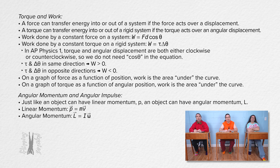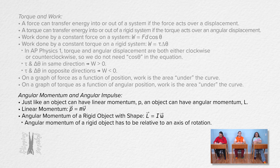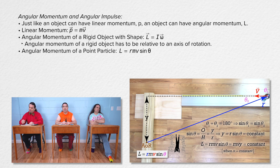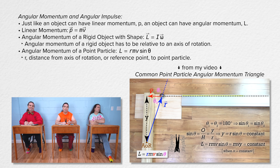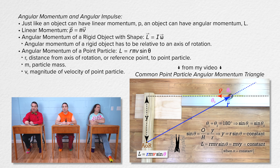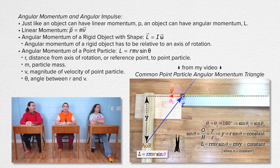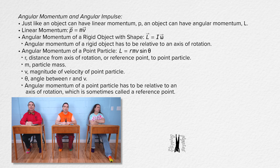Unlike linear momentum, there are two equations for angular momentum. The one just given is for the angular momentum of a rigid object with shape, and it has to be relative to an axis of rotation. The angular momentum of a point particle is R times M times V times sine theta, where R is the distance from the axis of rotation or reference point to the point particle, M is the mass of the particle, V is the magnitude of the velocity of the point particle, and theta is the angle between R and V.